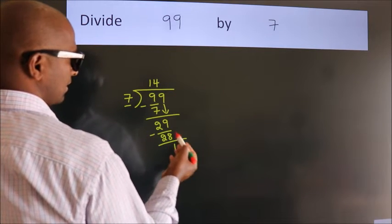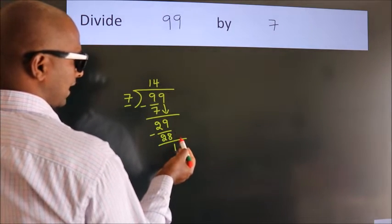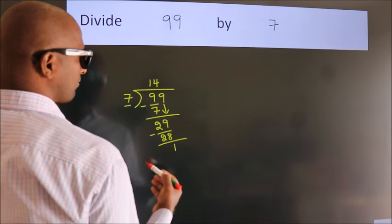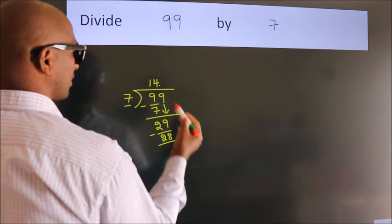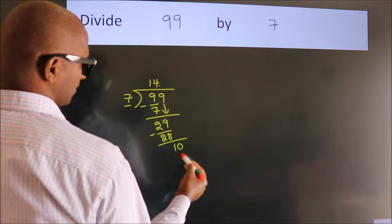After this, there are no more numbers to bring down. So what we do is put a dot and take 0. So we have 10.